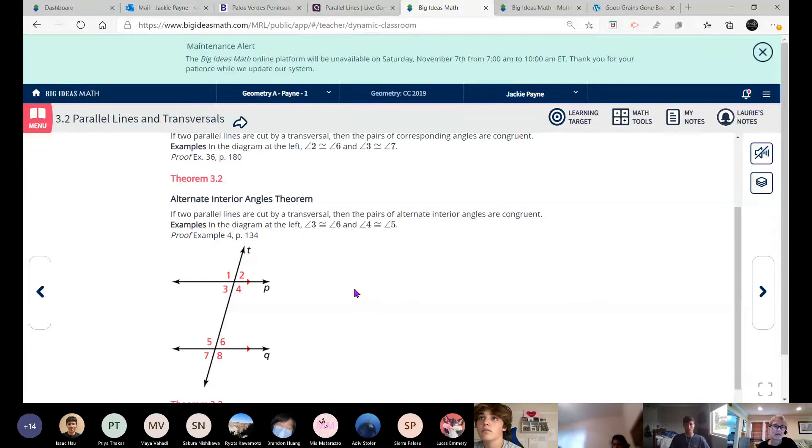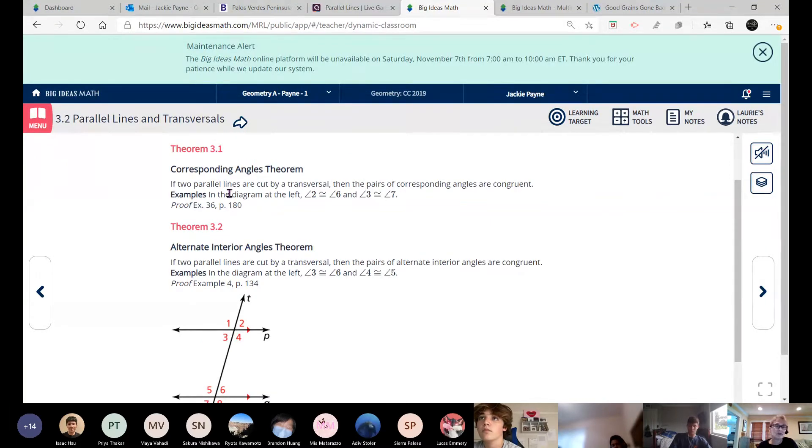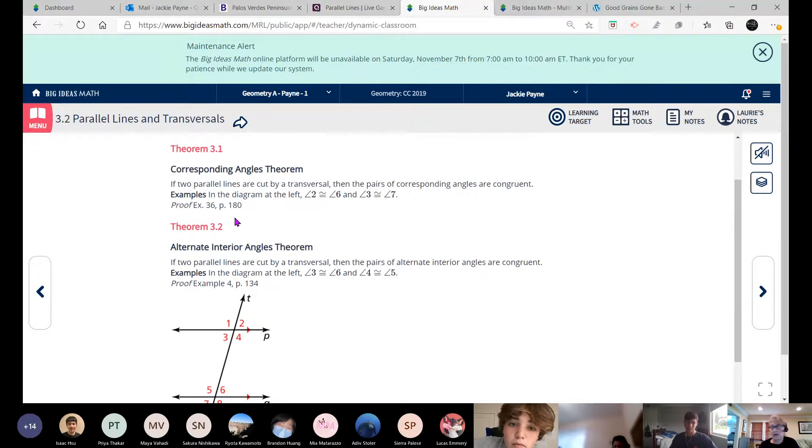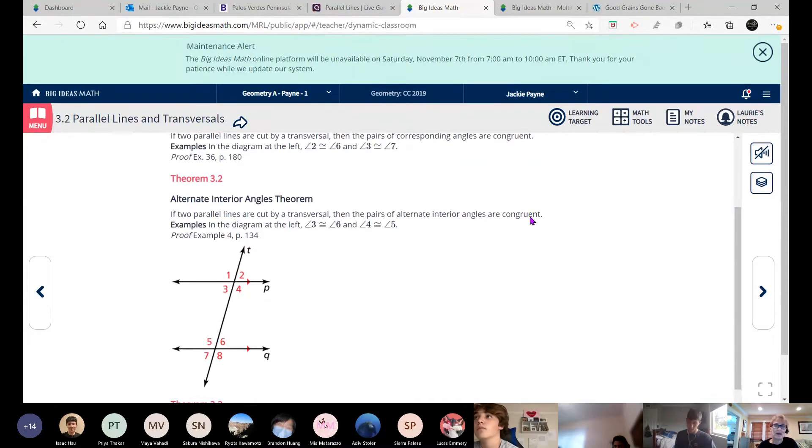So the thing about parallel lines is once you get parallel lines in a transversal, you get these theorems, which are kind of nice because you already know where they are. So here's your picture. Corresponding angles theorem. If two parallel lines are cut by a transversal, like our picture, then the pairs of corresponding angles are congruent. Yay! So in this picture, it shows that two is congruent to six, and three is congruent to seven. So Matt, what's another pair that's not listed? For corresponding angles. It says two and six are corresponding, and it says three and seven are corresponding. There's two more pairs. There's one and five and four and eight. Yeah, exactly.